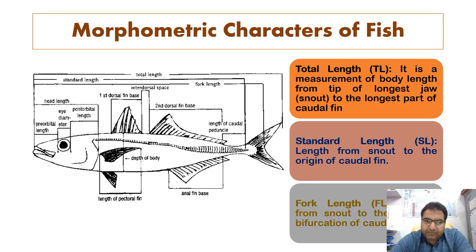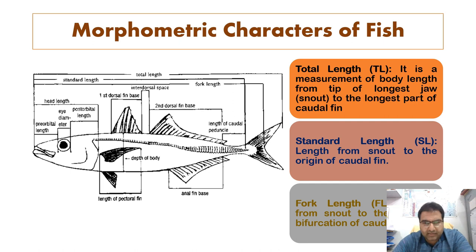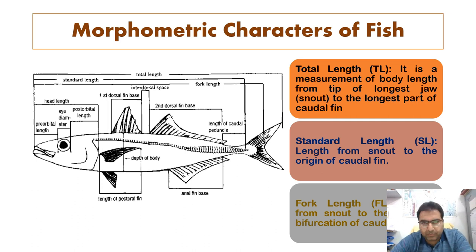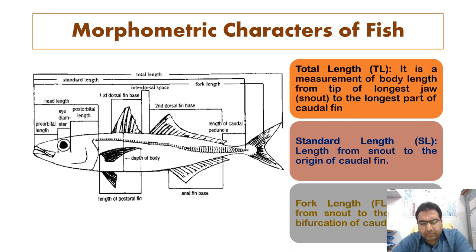There are various morphometric characters which can be measured — external features of a fish. These include total length, standard length, fork length, interdorsal space, head length, eye diameter, pre-orbital length, anal fin length, and many more. We shall be talking about each one by one.